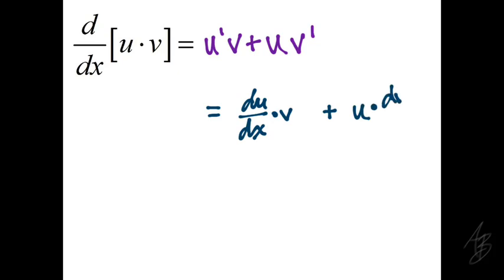Let's start by reviewing the product rule. If we take the derivative with respect to x of u times v, that's the derivative of u times v plus u times the derivative of v. In Leibniz notation, it would be du/dx times v plus u times dv/dx.